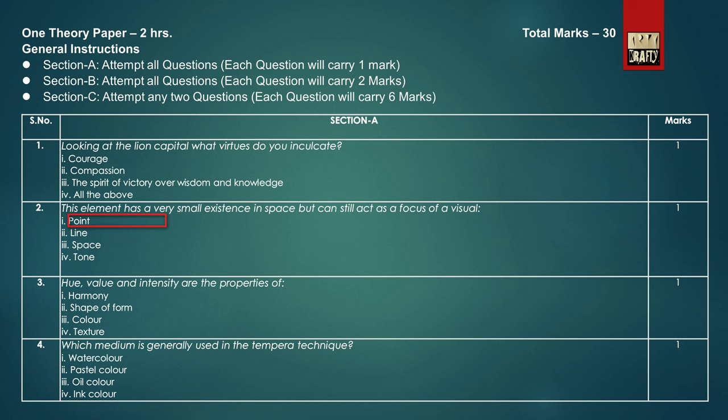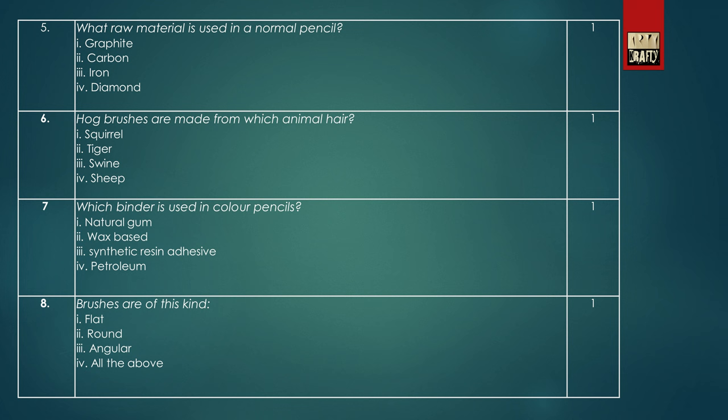Question 3: hue, value and intensity are the properties of color. Question 4: which medium is generally used in the tempera technique? Answer: watercolor. Question 5: what raw material is used in a normal pencil? Answer: graphite.